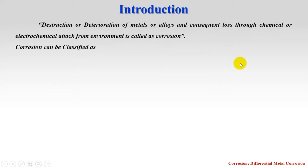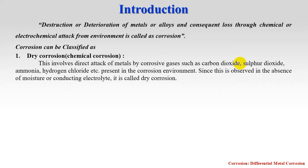Corrosion is classified into two types. The first is dry corrosion, also called chemical corrosion. Dry corrosion occurs in the presence of corrosive gases, where a direct chemical reaction takes place with gases such as sulfur dioxide, ammonia, hydrogen chloride, etc. Since it involves a direct chemical attack, it is called dry corrosion or chemical corrosion.